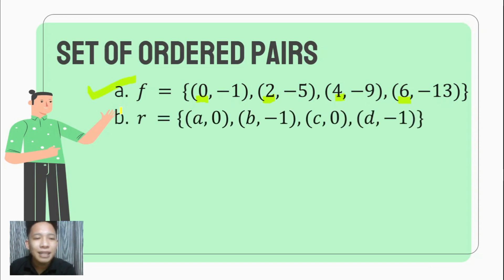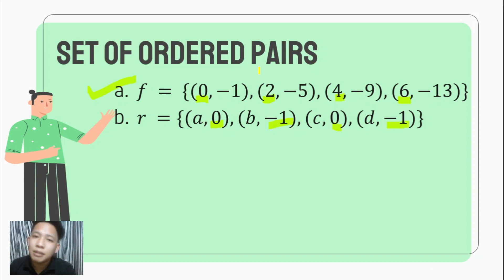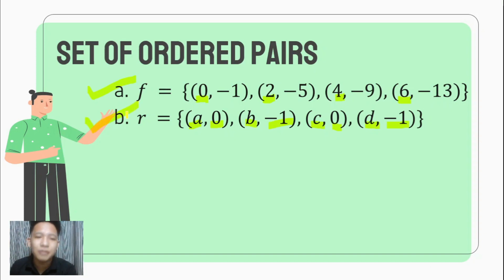Next, we have the ordered pairs (A, 0), (B, -1), (C, 0), (D, -1). Though the Y values repeat, our restriction when it comes to the definition of a function is that X must not repeat. Since none of the X values repeat, this set of ordered pairs still represents a function.